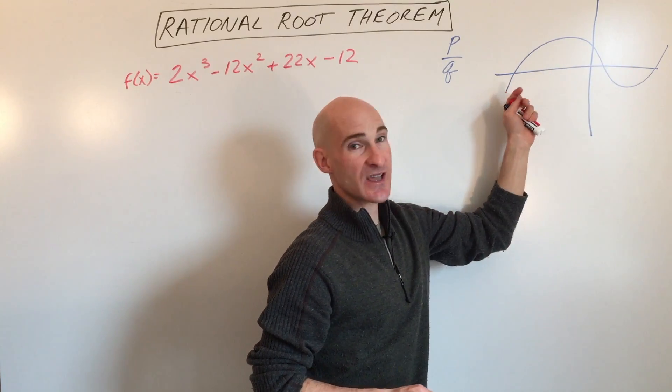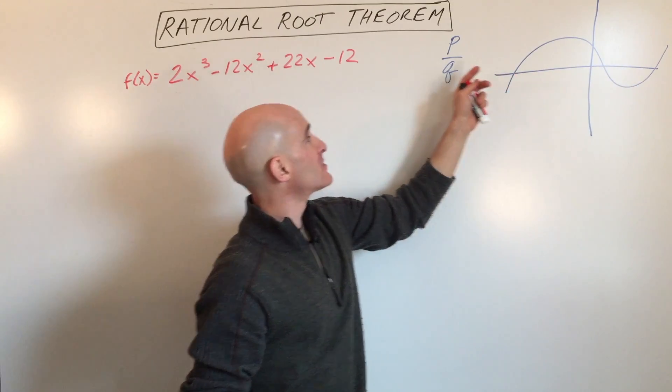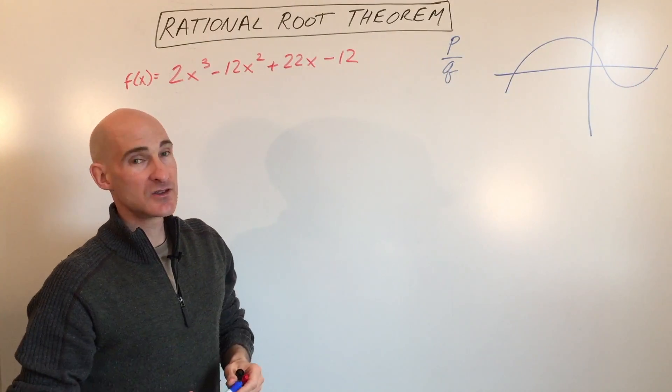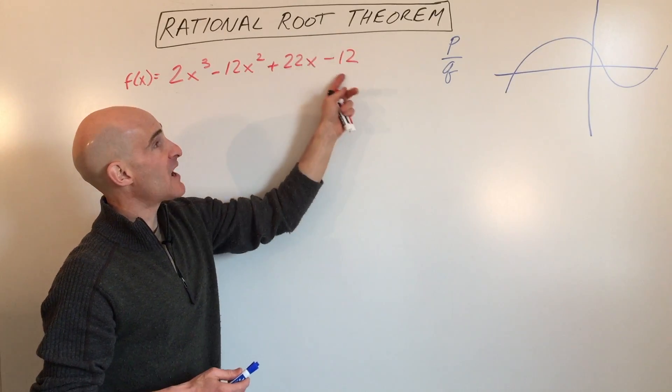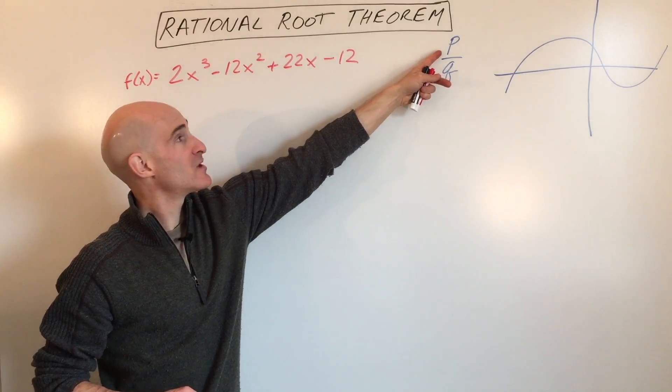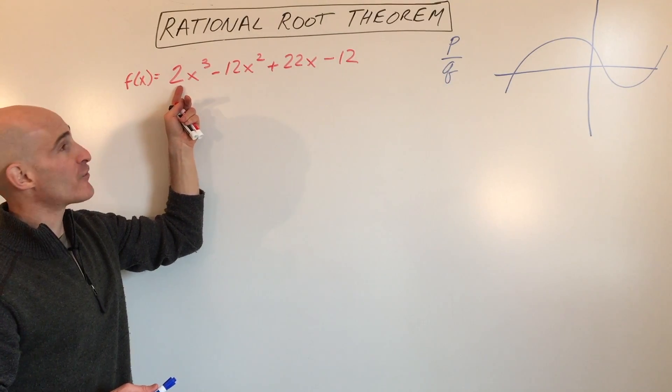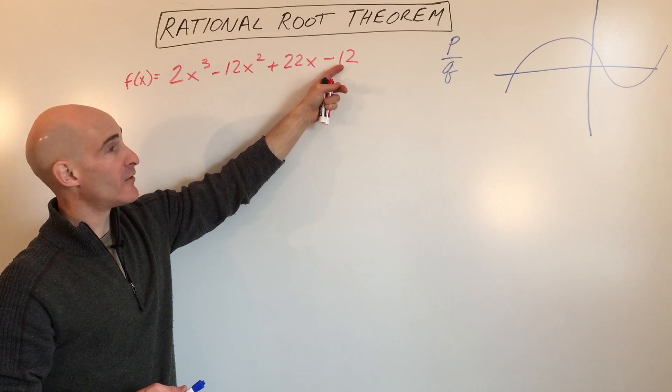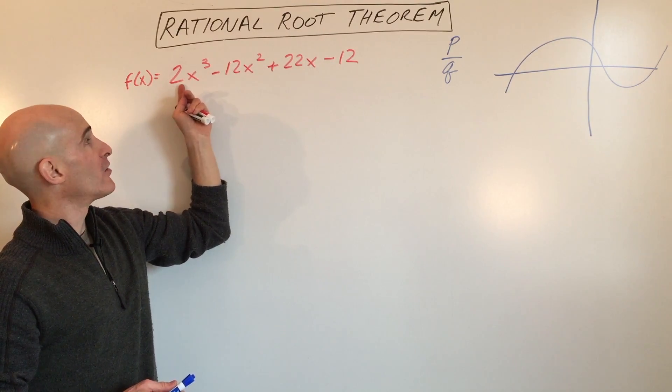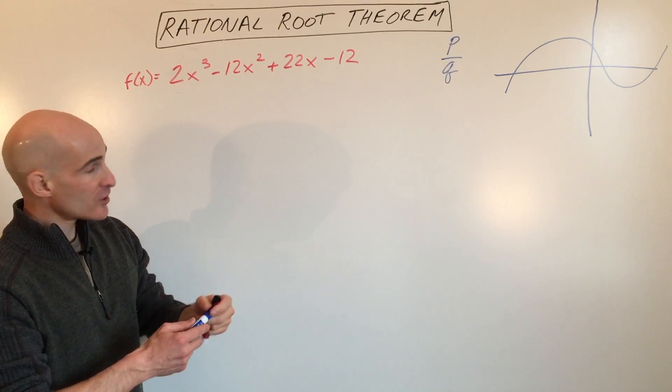They call these roots, solutions, x-intercepts, zeros - those all mean the same thing. The way we find these rational roots is by taking all the factors of the constant, sometimes referred to as p, over all the factors of the leading coefficient. All the factors of the constant, meaning all the numbers that divide evenly into 12, divided by all the integers that divide evenly into this leading coefficient, 2.